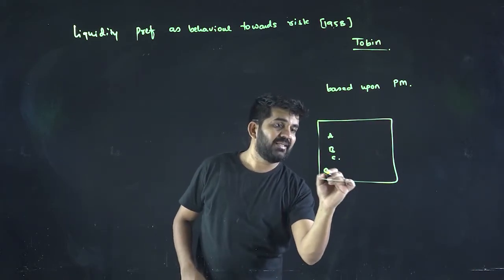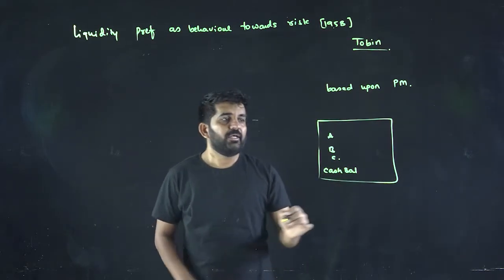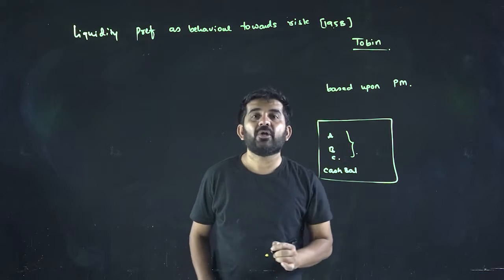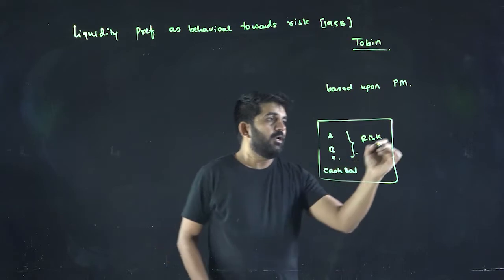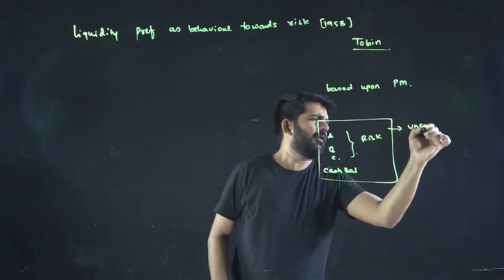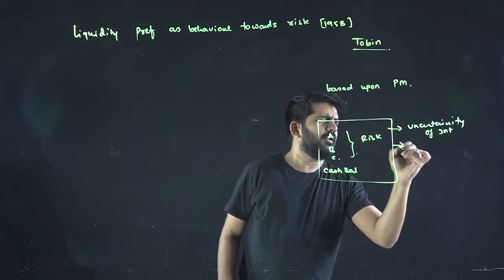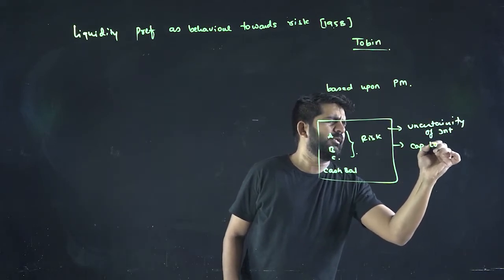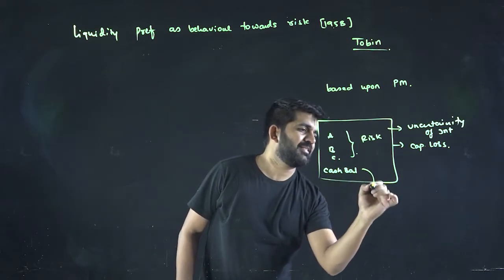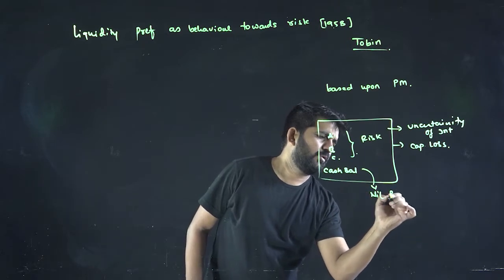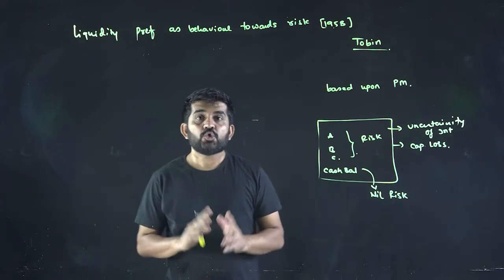These three securities might be having some risk - risk of uncertainty of interest, risk of capital loss. Cash balance doesn't have any risk. It is not having any risk.